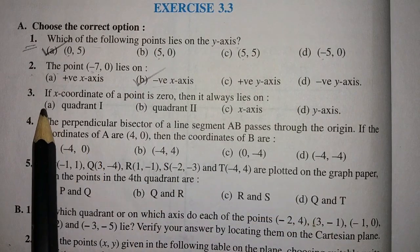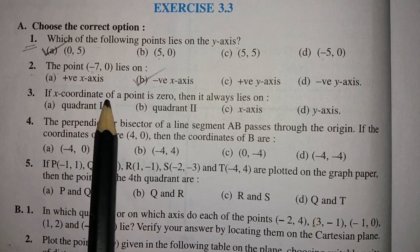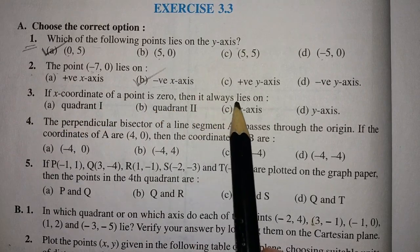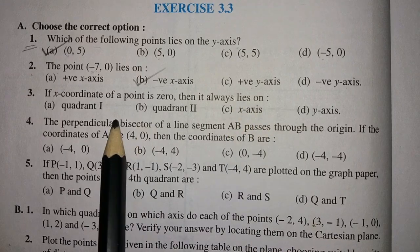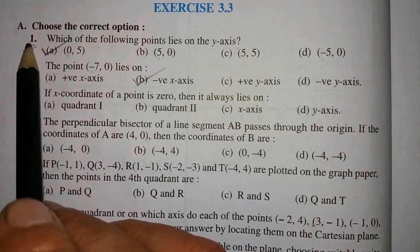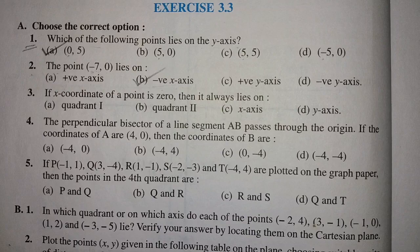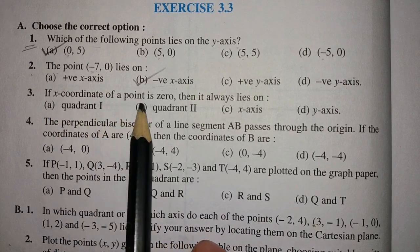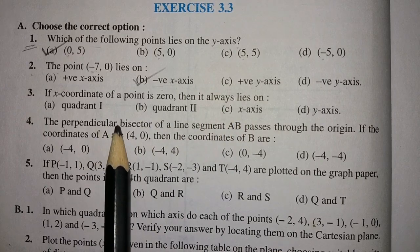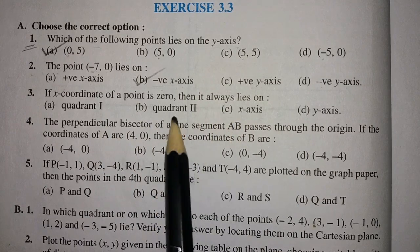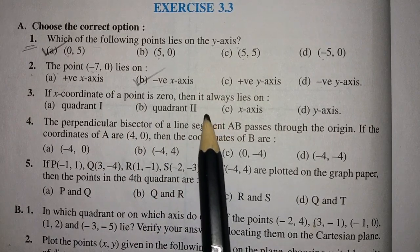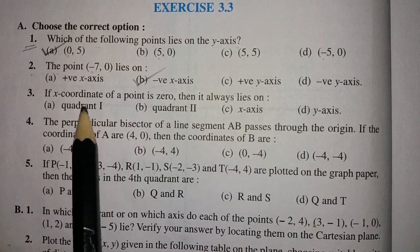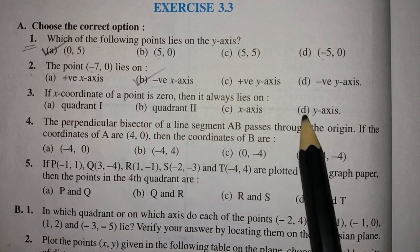Question 3: if the X coordinate of a point is 0, then it always lies on the Y axis. And if the Y coordinate is 0, then it lies on the X axis. So the answer here is the Y axis.